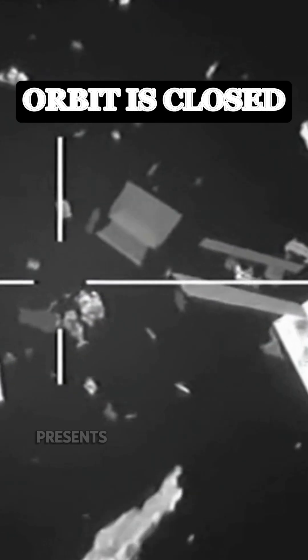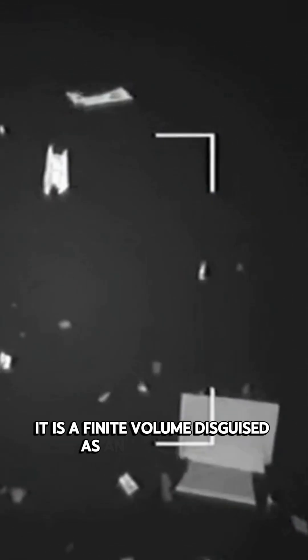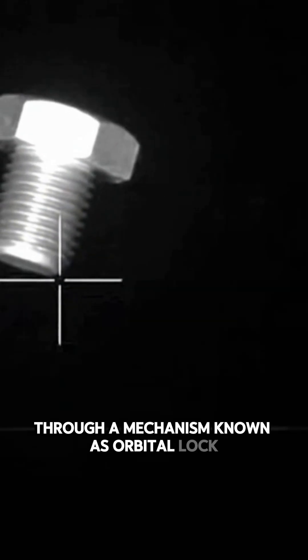The domain of low Earth orbit presents a physical paradox. It is a finite volume disguised as an infinite void. We are currently engineering our own containment through a mechanism known as orbital lock.